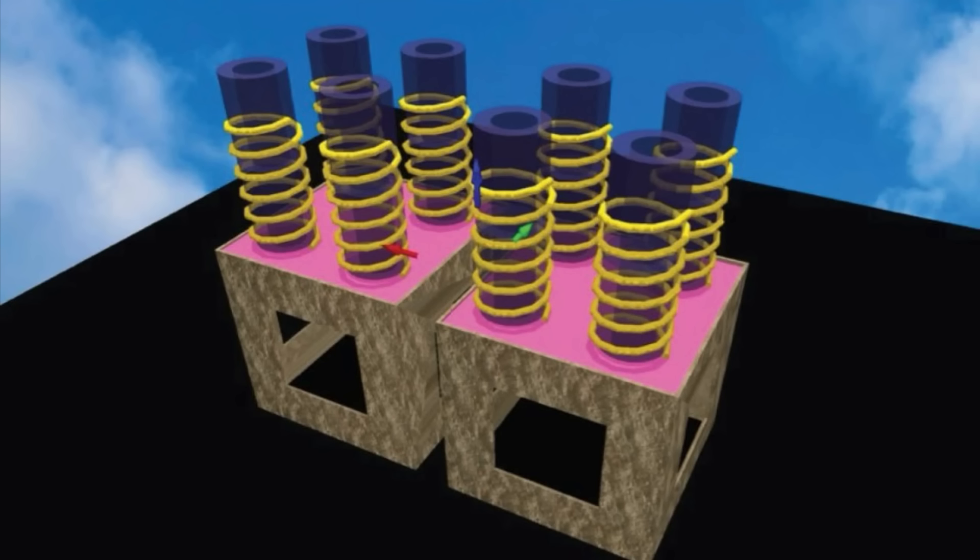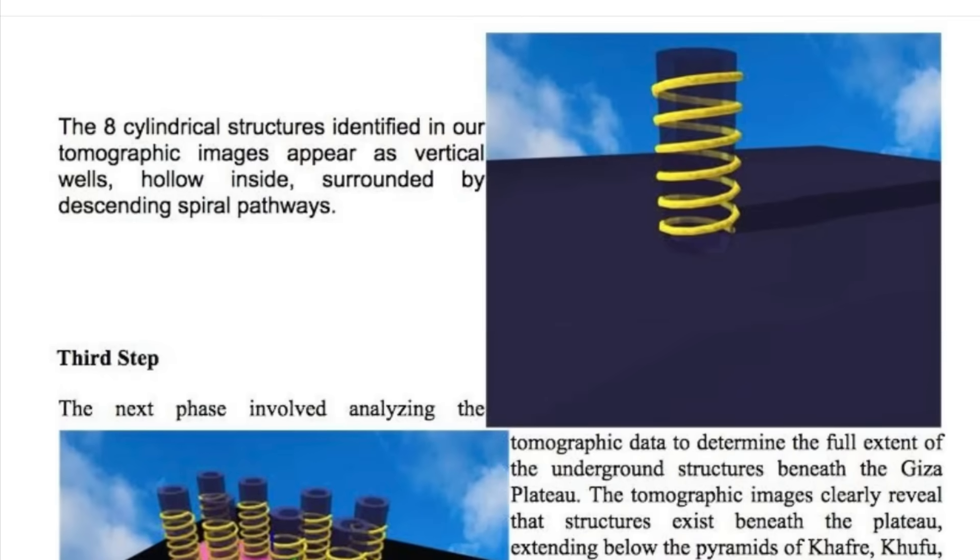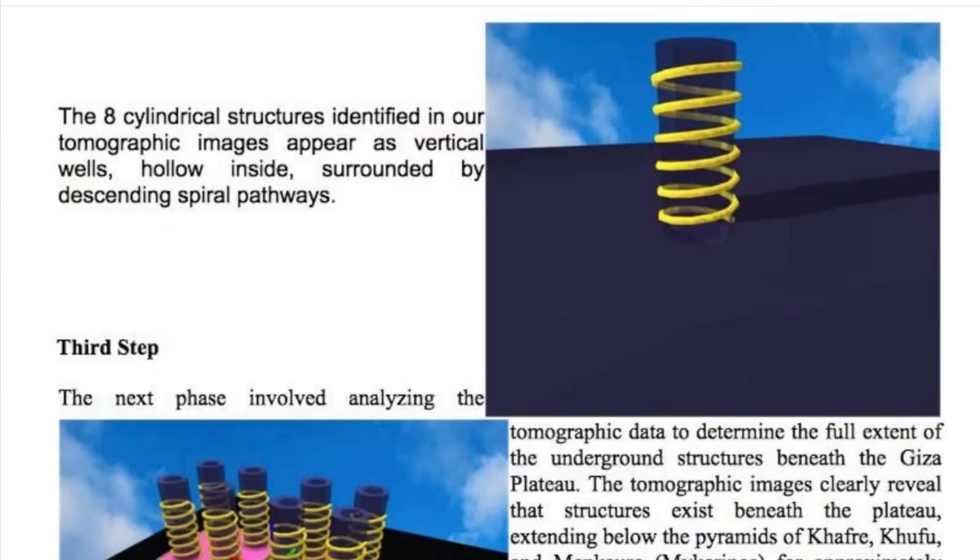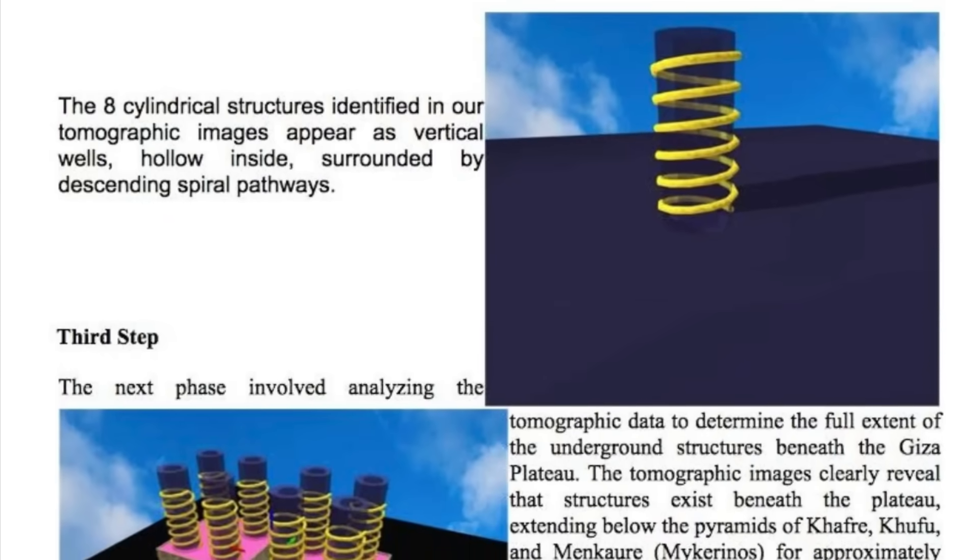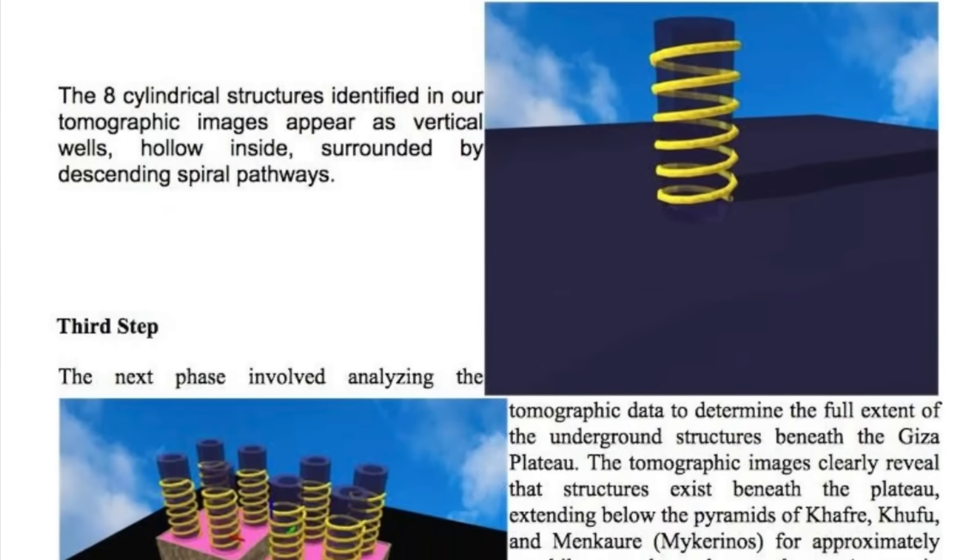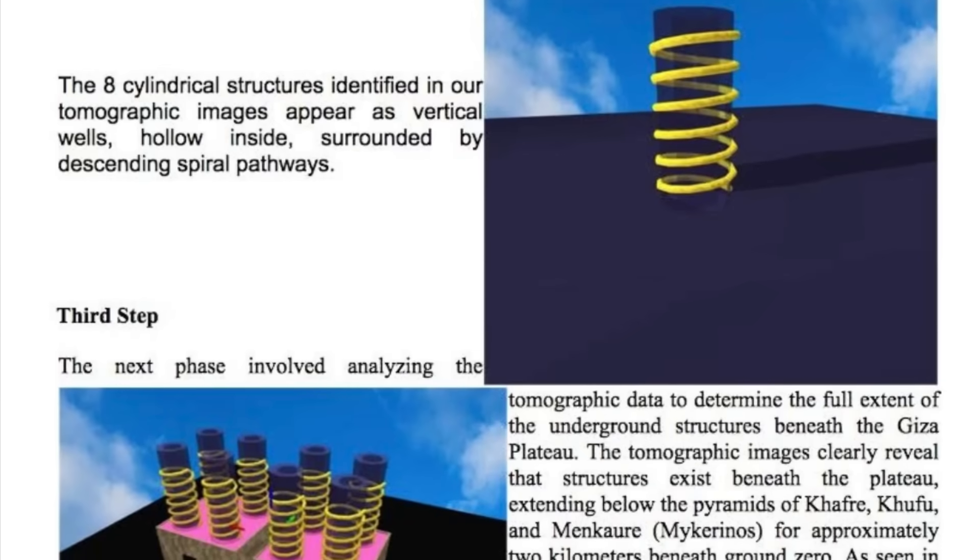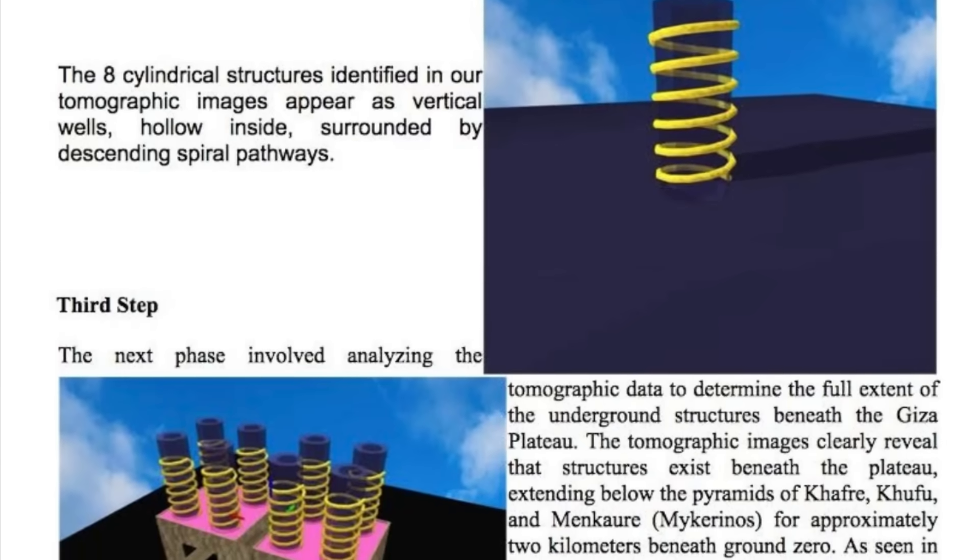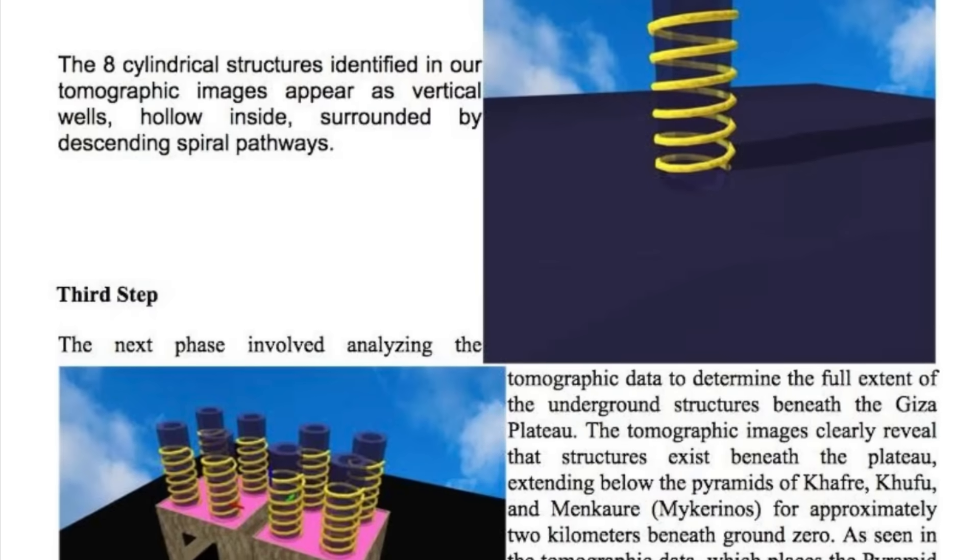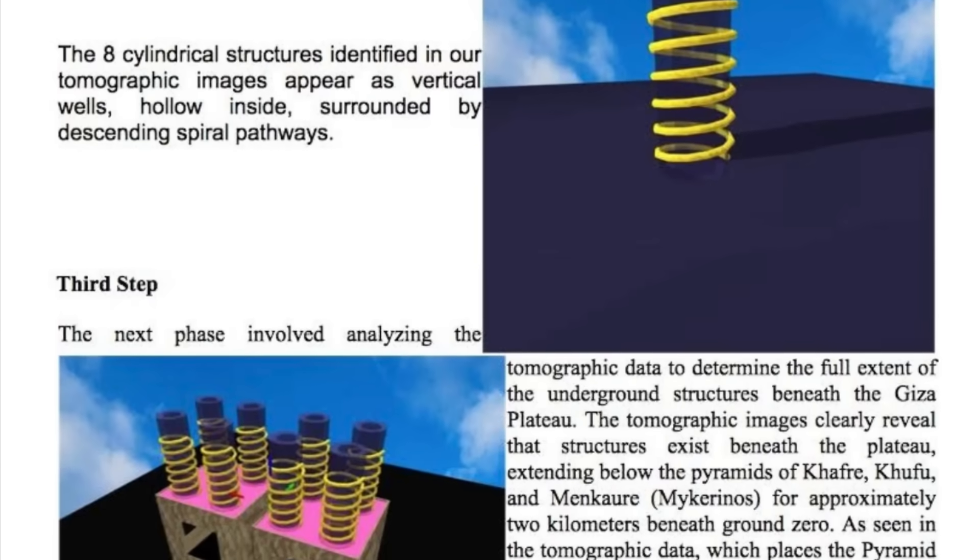The paper then adds to that with some even more interesting detail, which is that the eight cylindrical structures that have been identified in the tomographical image appear as vertical wells which are hollow inside and surrounded by descending spiral pathways.